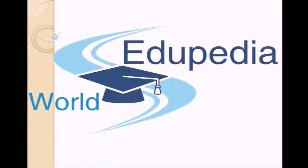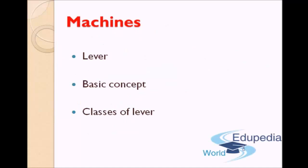Hi friends, welcome back to Euripedia world. In the last lecture we saw different terminologies and definitions related to machine. Today we will understand about the first kind of machine that is a liver. We will see the definition of a liver, understand the basic concepts, the different classes of liver, and the mechanical advantage for the different classes of liver. So let us get started with this very interesting concept about liver.